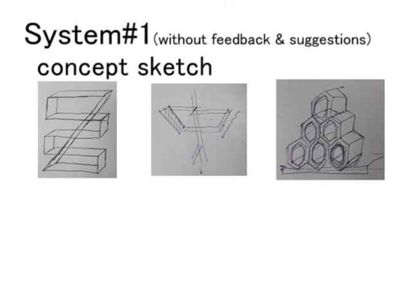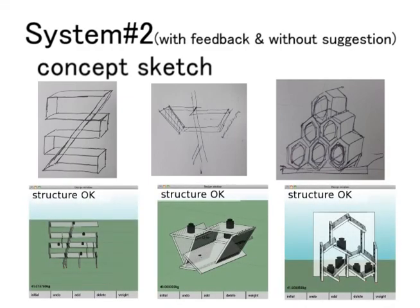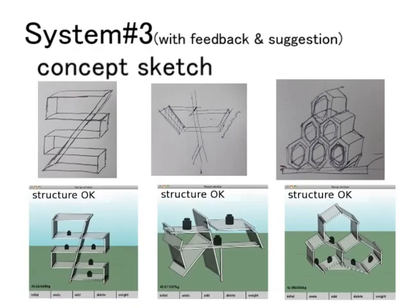Here are three examples from our user study. In all cases, users failed to design a valid bookshelf with System 1. With System 2, users could design a valid bookshelf but significantly deviating from the concept sketches. With our system, System 3, users succeeded in all cases.